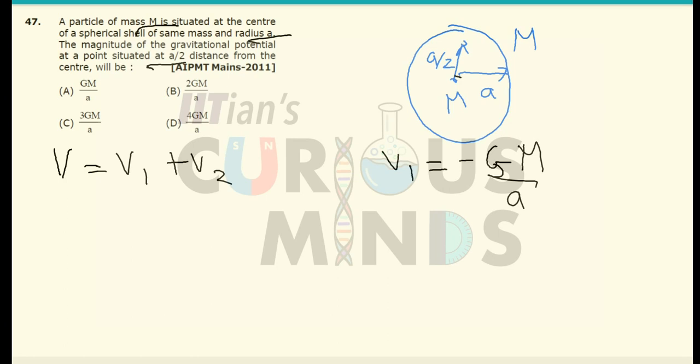And due to this particle, the potential will simply be equal to minus GM. Now the distance from the mass will be equal to A by 2.